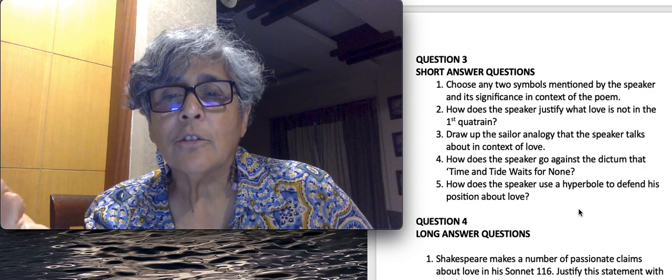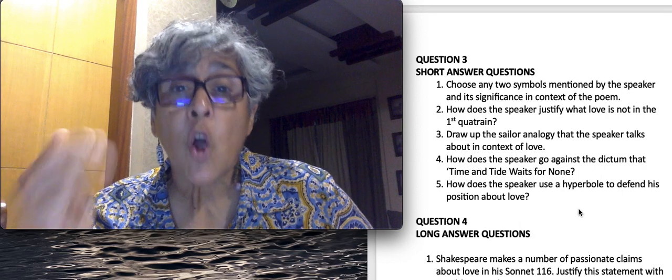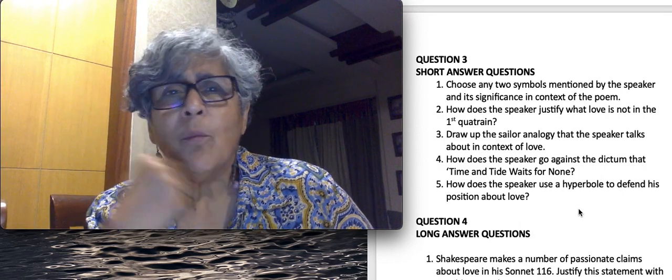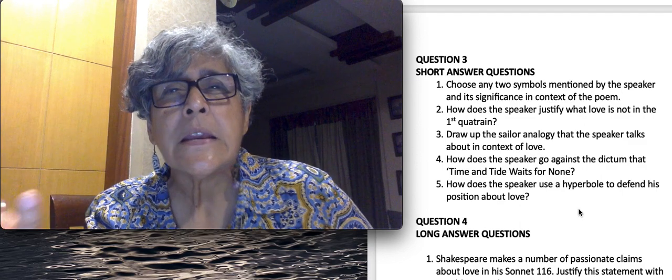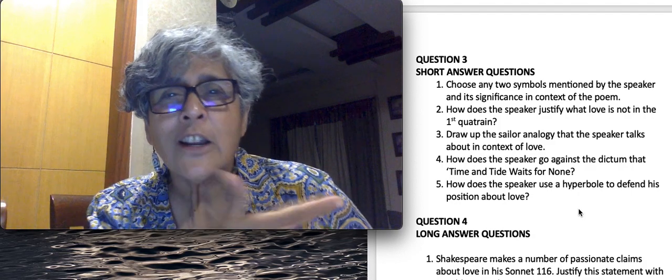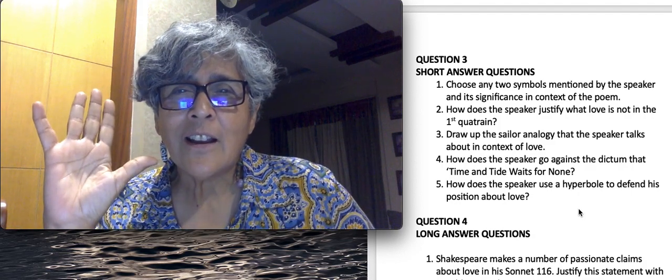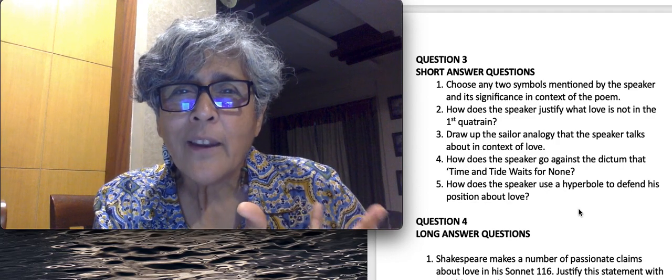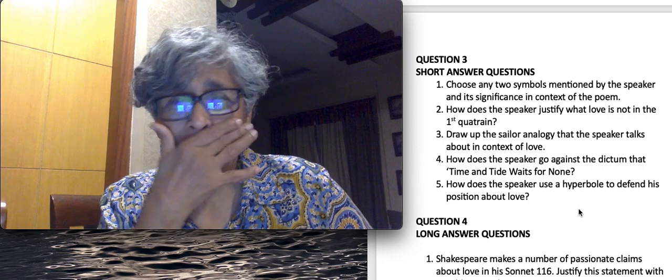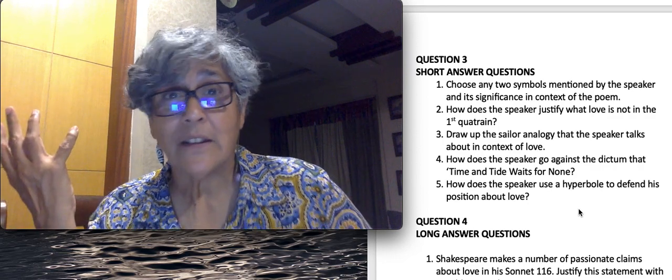Look at the second question: how does the speaker justify what love is not in the first quatrain? Focus on the first four lines. What love is not: love is not weak, love is not timid, love is not shallow. It does not alter when people alter. It does not vanish away when time comes and takes everything away. It does not bow down to barriers. Very simple. You have your answer based on the first quatrain.